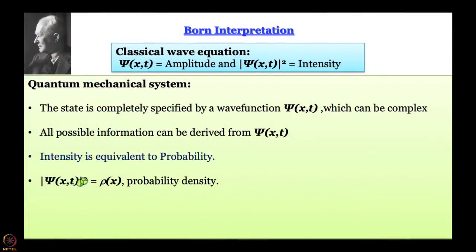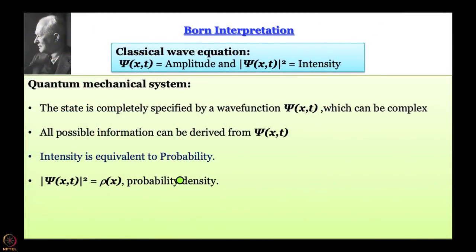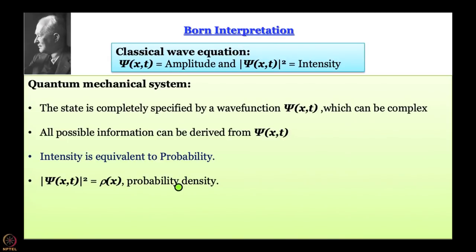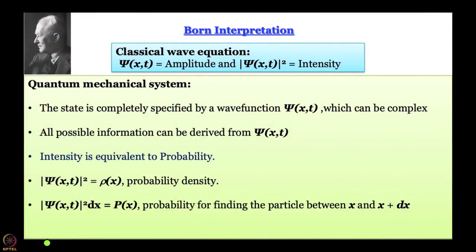If the wave function is not complex, then it is simply ψ². It is also important to remember that mod ψ² is ρ(x), the probability density — it is not the probability itself — because you cannot really talk about probability at a point; a point has no dimensions. When one wants to talk about probability, one has to define a volume element. The probability in one dimension is given by mod ψ² dx, which is the probability of finding the particle between x and x+dx. It is x-dependent because ψ itself is x-dependent.